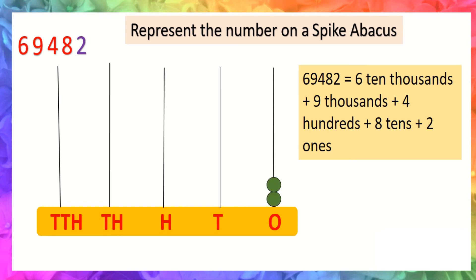At tens place the digit is eight, so we will draw eight beads: one, two, three, four, five, six, seven, eight. At hundreds place the digit is four.